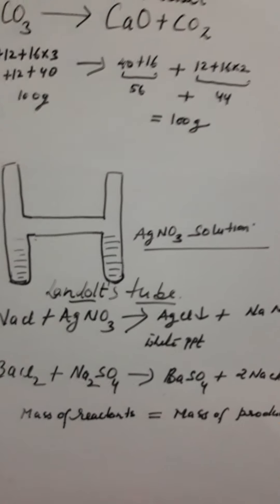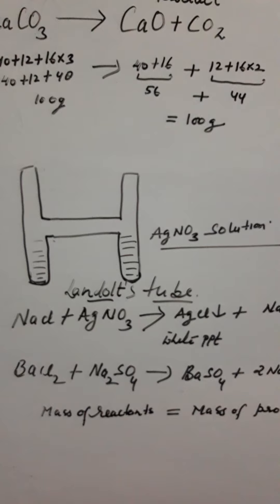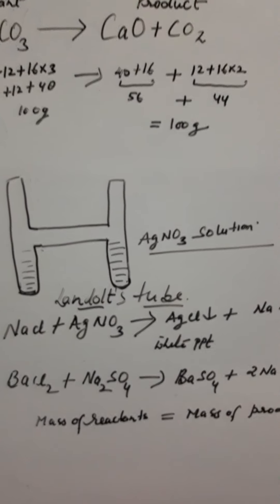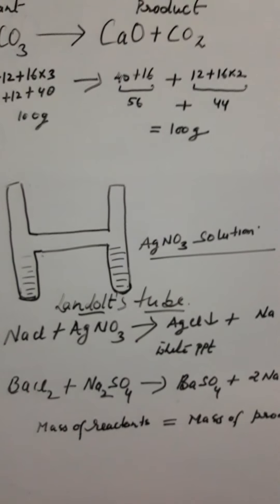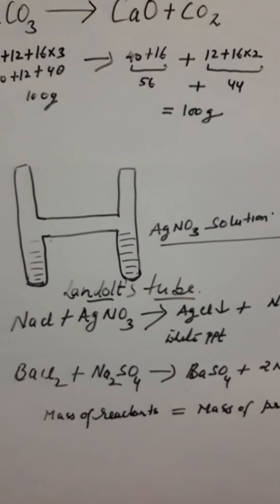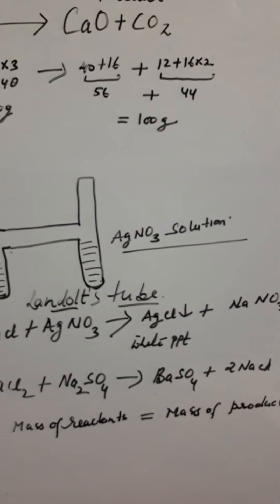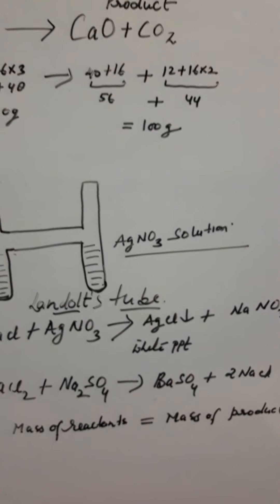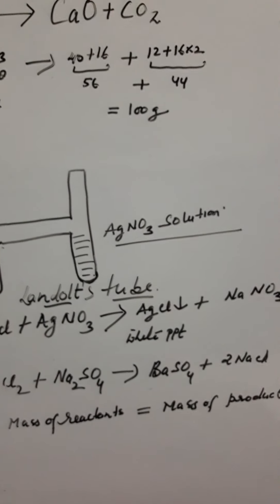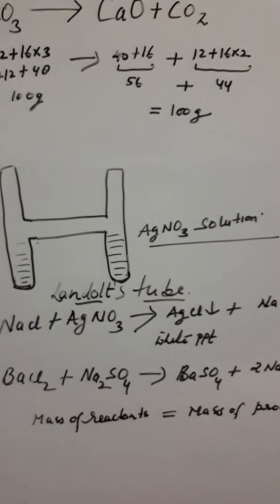As another example, in place of sodium chloride we can take barium chloride (BaCl2) solution and mix it with sodium sulfate (Na2SO4). Before mixing we take the weight, then mix the solutions. The reaction will form barium sulfate (BaSO4) and sodium chloride (NaCl). After the reaction, if we take the weight again, the mass of the tube is found to be exactly the same.